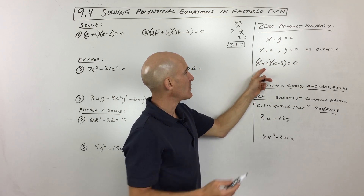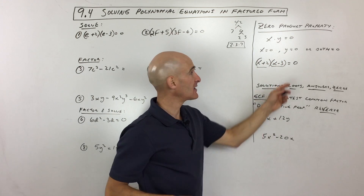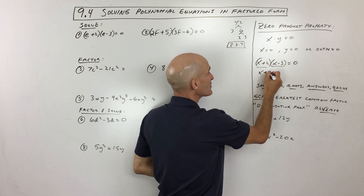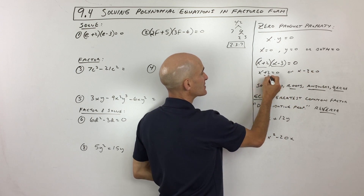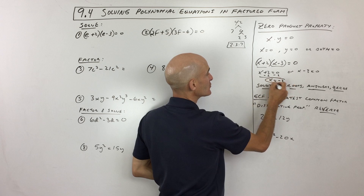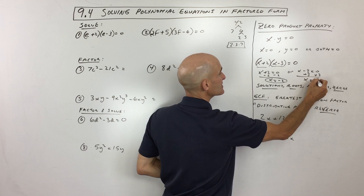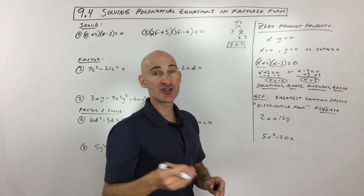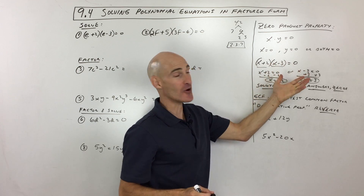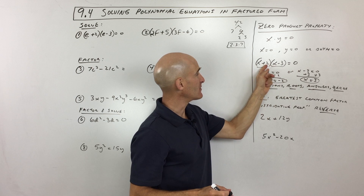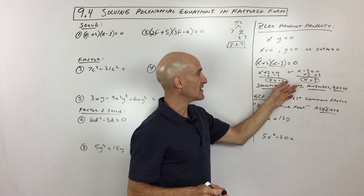Let's look at an example. Say we have (x+2) multiplied by (x-3) equals zero. That means x plus 2 has to equal zero, or x minus 3 has to equal zero. If I subtract 2 from both sides, x equals negative 2. Over here, if I add 3 to both sides, x equals positive 3. You can check your work: negative 2 plus 2 is zero, and zero times negative 5 is zero. Or, putting 3 in: 3 minus 3 is zero, and zero times 5 is zero. So the answers are negative 2 or 3.